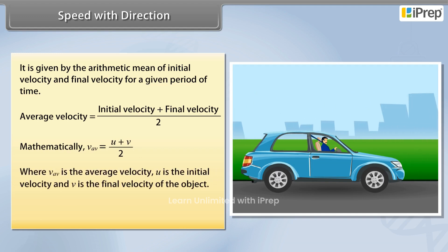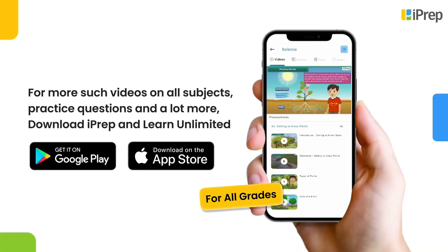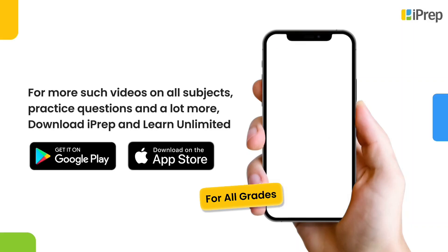u is the initial velocity and v is the final velocity of the object. Speed and velocity have the same units, that is, meter per second.